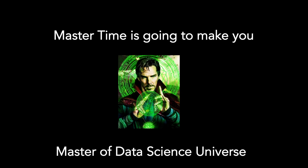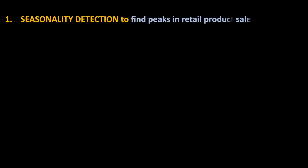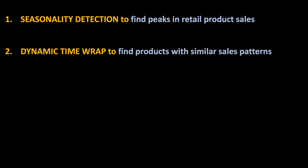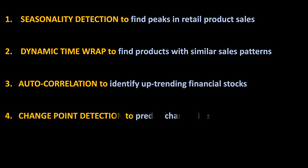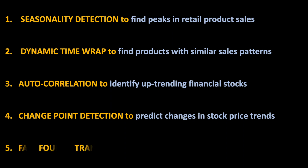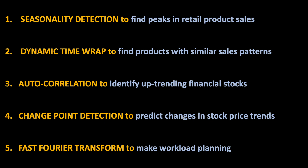The top five techniques which I will demonstrate in this video are: seasonality detection to find peaks in retail product sales, dynamic time warp to find products with similar sales patterns, autocorrelation to identify uptrending financial stocks, change point detection to better understand changes in stock price trends, and fast Fourier transforms to enable workload planning.